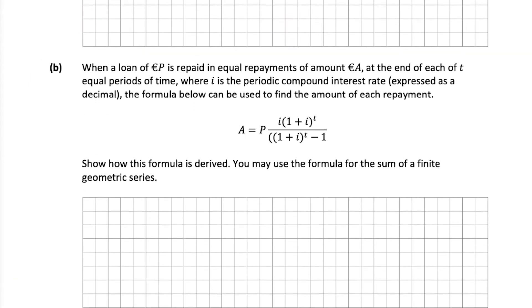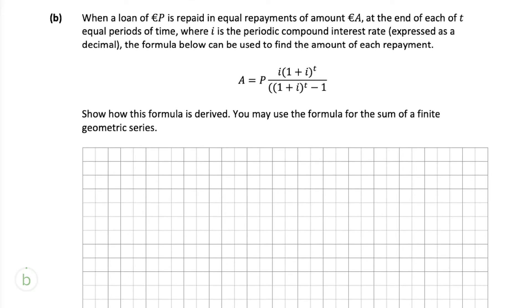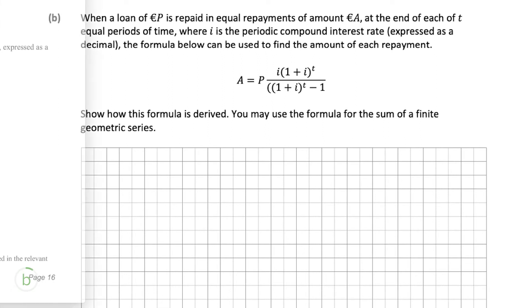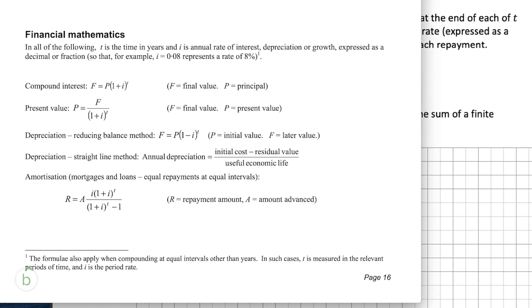Part (b) says that when a loan of p is repaid in equal repayments of an amount a at the end of each t equal periods of time, where i is the periodic compound interest rate expressed as a decimal, the amortization formula below can be used to find the amount of each repayment. It asks us to show how this formula is derived, using the formula for the sum of a finite geometric series.